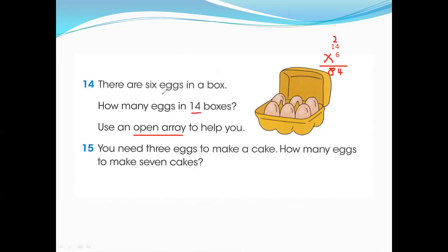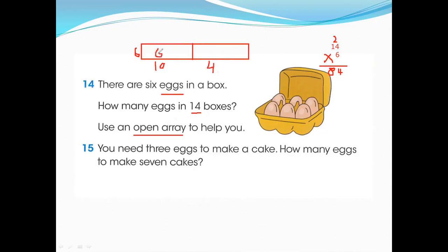Now using the open area method: there are 14 boxes and 6 eggs in each box. Draw a box and write 6 for multiplication. Partition 14 into 10 and 4. Ten multiplied by six equals 60; four multiplied by six equals 24. Then add: 60 plus 24 equals 84. So our answer is 84.